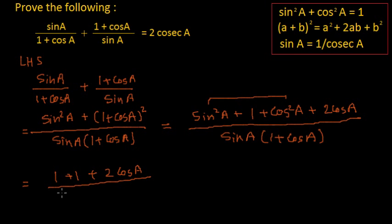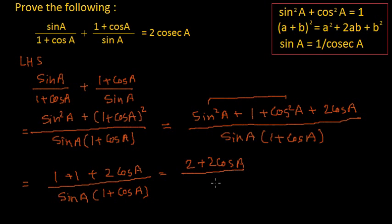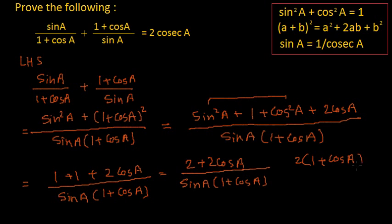So this can be written as 2 plus 2 cos a divided by sine a multiplied by 1 plus cos a. And if I take 2 common from the numerator, I'll get 2 multiplied by 1 plus cos a, divided by sine a multiplied by 1 plus cos a.